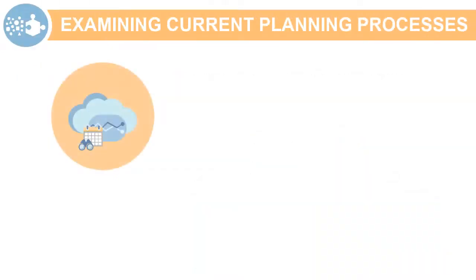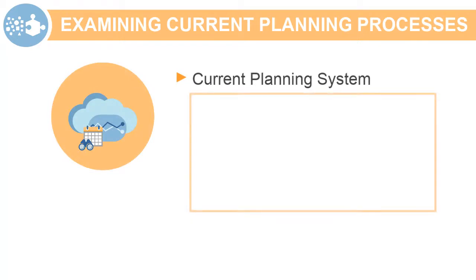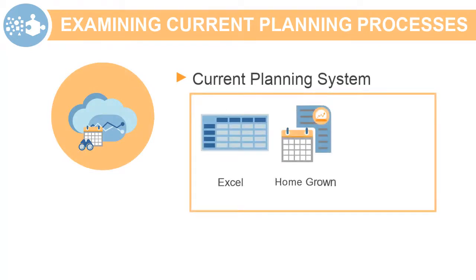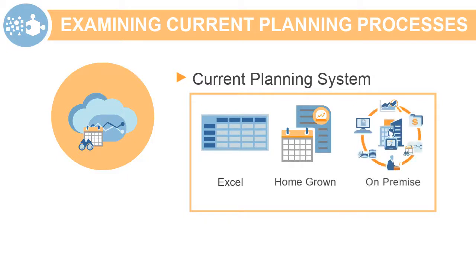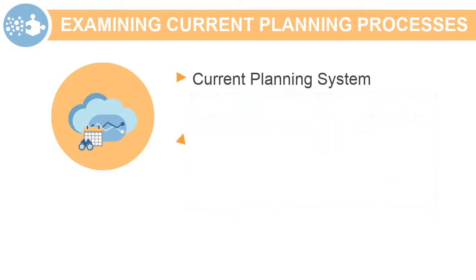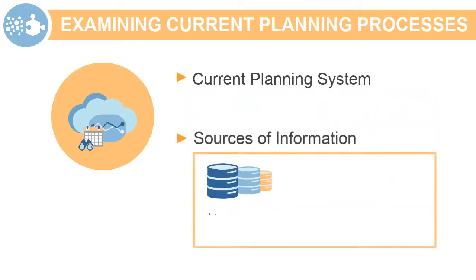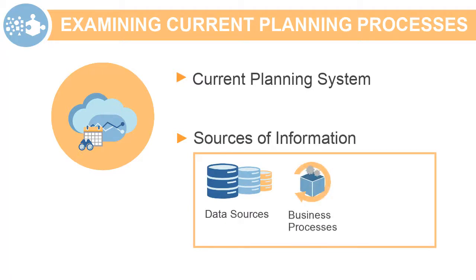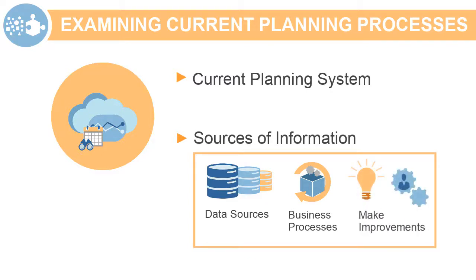To get the design process started, take a look at what the customer currently uses for planning. Do they use Excel spreadsheets, a homegrown system, or Oracle's on-premise planning? Define what the sources of information are and familiarize yourself with their business processes. See what is working well for them and improve on areas that are not working as well when incorporating needed processes into the design.